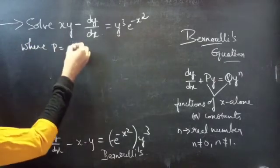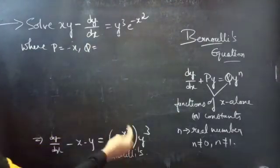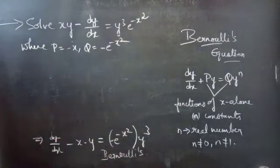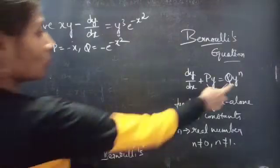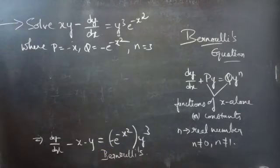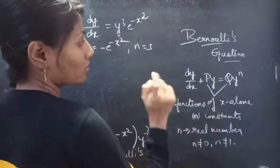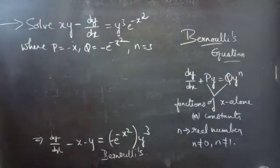By comparing the two equations, we get p equals minus x, q equals minus e^(−x²), and n equals 3, since the y³ term gives n equals 3. Here p and q are functions of x alone or constants, and n is a real number such that n ≠ 0 and n ≠ 1.